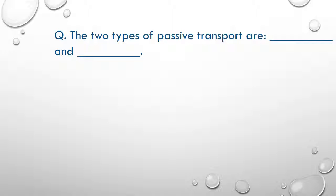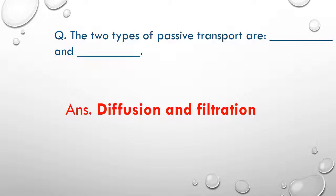The two types of passive transport are diffusion and filtration. This type of transport does not require any energy, so no ATP is involved.